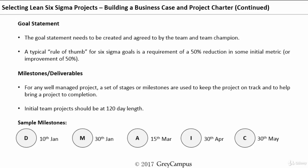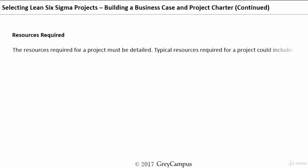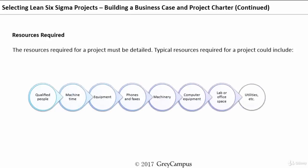If a project is prolonging beyond 8 to 10 months, it has likely gotten stuck and the probability of successful completion is very thin. As part of the project charter, we also identify the resources required — qualified people, machine time, equipment, computers, lab and office space, utilities, and human resources. These must be meticulously planned so that resources are available at the right time for the project work.